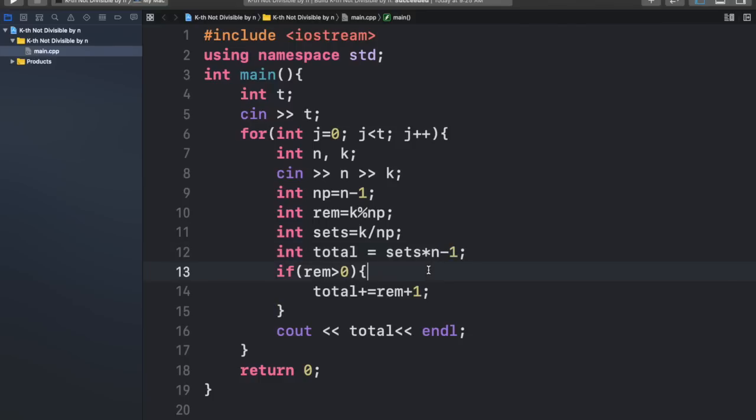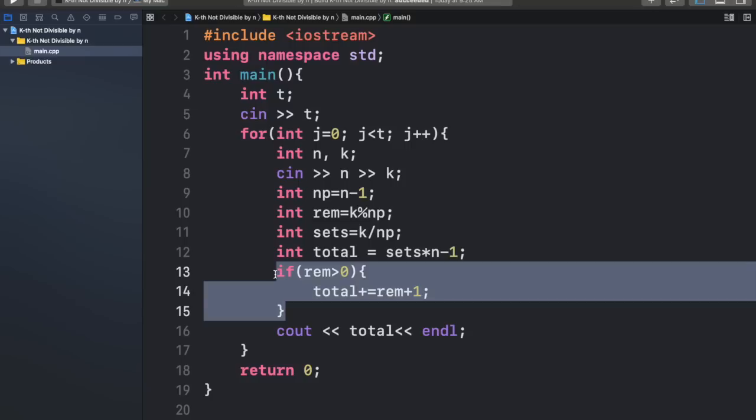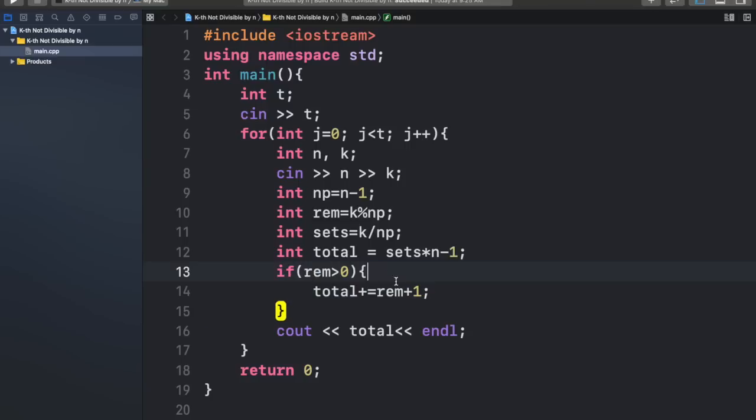And then if the remainder part, so here we check the remainder, or the number of steps which we want to take in the next set. So if the remainder is greater than 0, what we want to do is that we want to add the remainder plus 1, because we know that we need to make a jump of 2 from 1 set to the next set. So we add 1, and then we add the remainder. This add 1 helps us counter the jump of 2 which we need. So then we just print out the total.